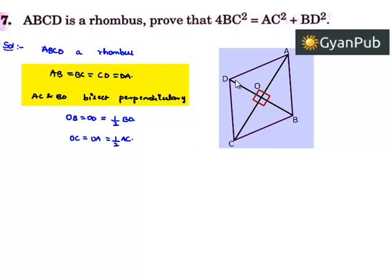Now let us consider triangle BOC. It is a right-angled triangle with angle BOC = 90°.